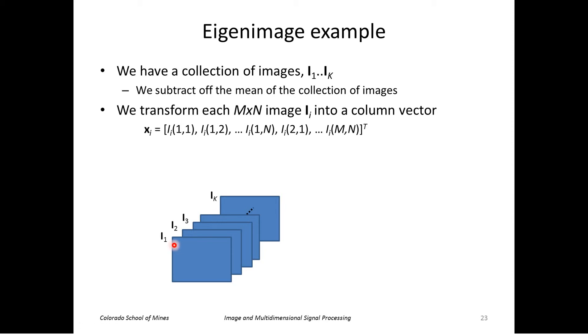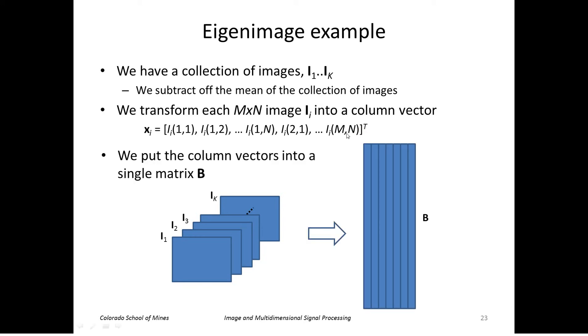So each image, we essentially scan in row order like this and just stack up all the pixels in a single vector like this. We'll then take all of those vectors and put them into a matrix called B here. So this matrix, the number of rows is the number of pixels I had in each image, and the number of columns is the number of images I have.